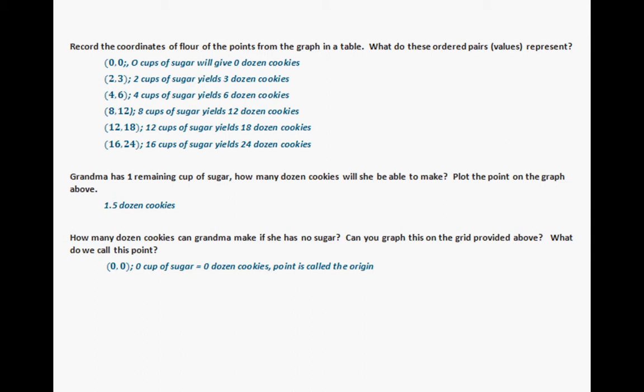For the second part, grandma has one remaining cup of sugar — how many cookies will she be able to make? If two cups gives three dozen cookies, then one cup gives one and a half dozen cookies. Plot that point on the graph at coordinate one comma one and a half. For the last question — how many dozen cookies can she make with no sugar? If she has no sugar, she can't make any cookies, which shows this is a proportional relationship.